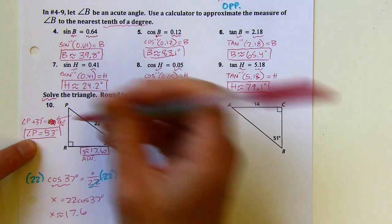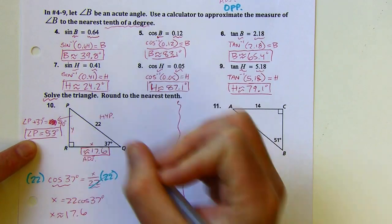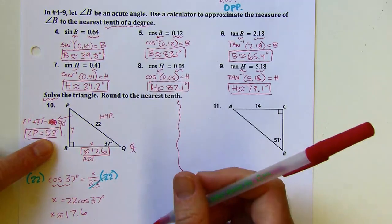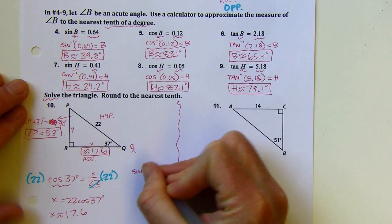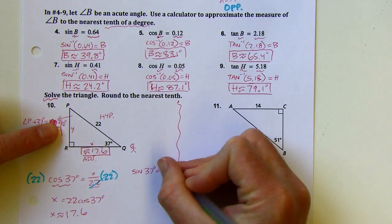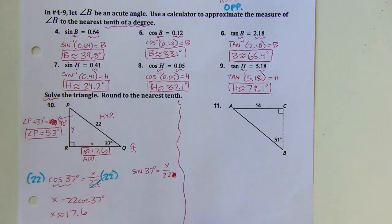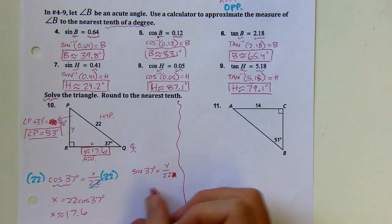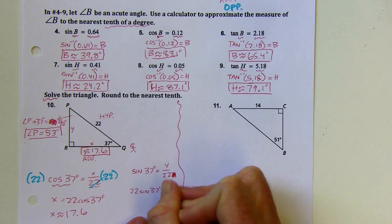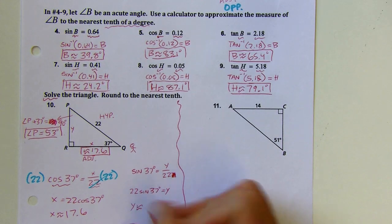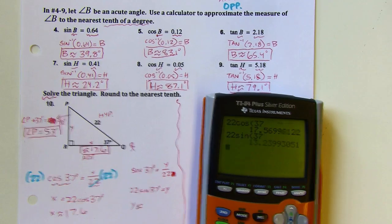From angle R, this other side would be opposite. I'll call it Y. I'd use opposite over hypotenuse, which is sine. So: sine of 37 degrees equals Y over 22. I'm going to multiply both sides by 22, use my calculator, and that's about 13.2.